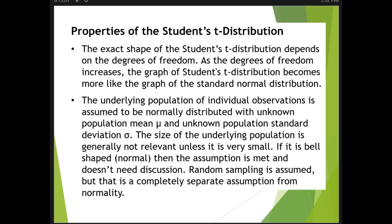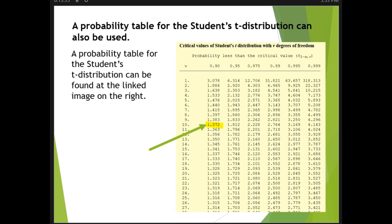The underlying population of individual observations is assumed to be normally distributed with unknown population mean μ and unknown population standard deviation σ. The size of the underlying population is generally not relevant unless it's very small. If it is bell-shaped (normal), then the assumption is met and doesn't need discussion. Random sampling is assumed, but that's a completely separate assumption from normality.